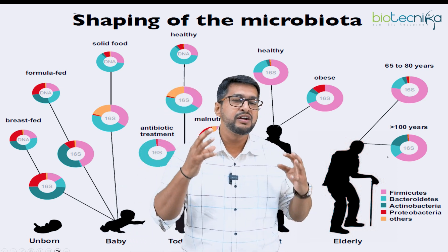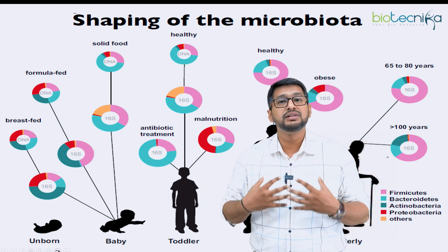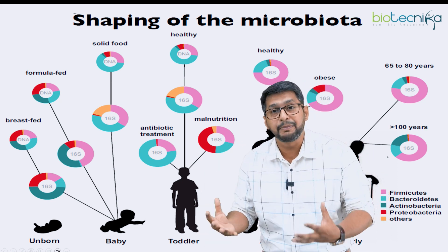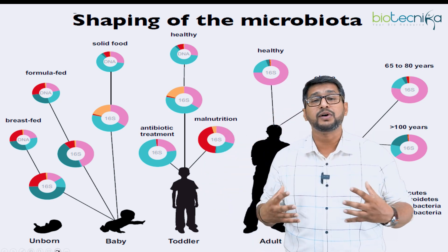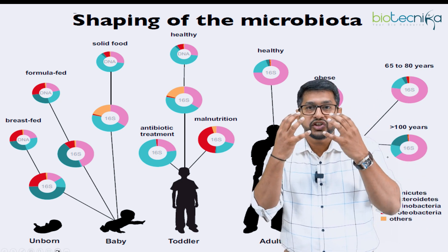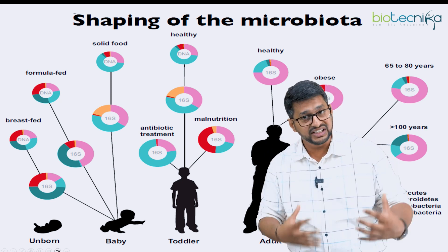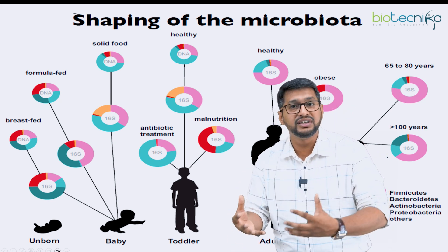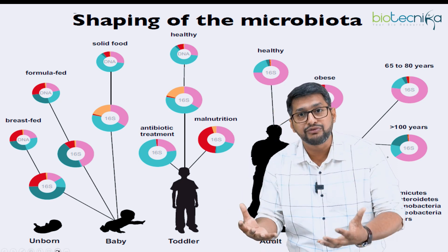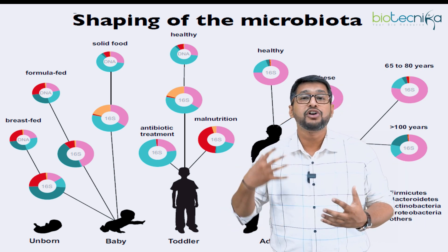When you were born, the mode of delivery — whether it was a C-section or a normal labor — makes a difference in the adherence of microorganisms. When unborn in fetal condition, the microbial association is entirely different. After delivery, if the infant is breastfed, the consortium of microorganisms is different; if on formula feed, again the consortium differs.